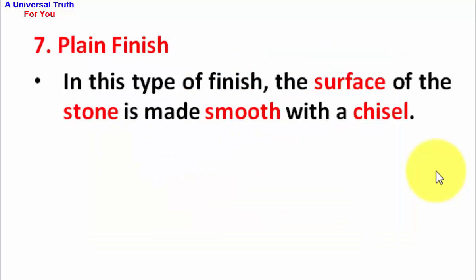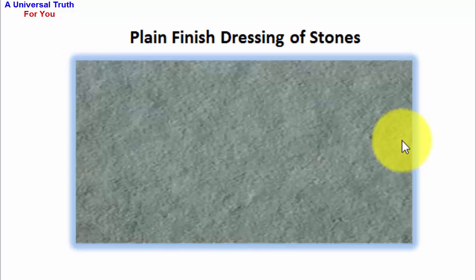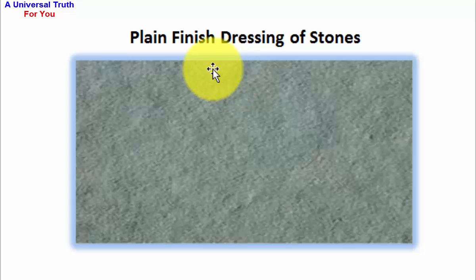Number 7, Plain finish. In this type of finish, the surface of the stone is made smooth with a chisel. This is picture of plain finish dressing of stones.